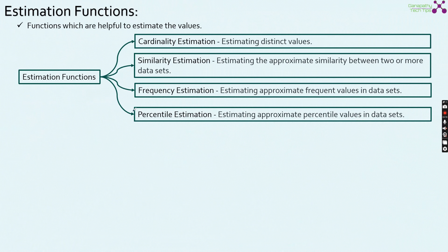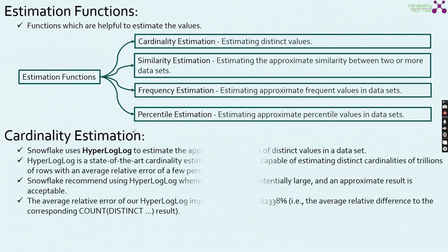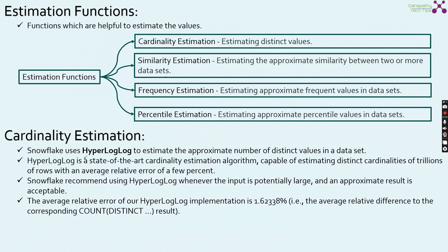So far, Snowflake provides us with these four sorts of estimations, and each one comes with lots of native Snowflake functions. First, we are going to discuss about the cardinality estimation functions. Snowflake uses HyperLogLog, which is the algorithm to estimate the approximate number of distinct values in a data set.